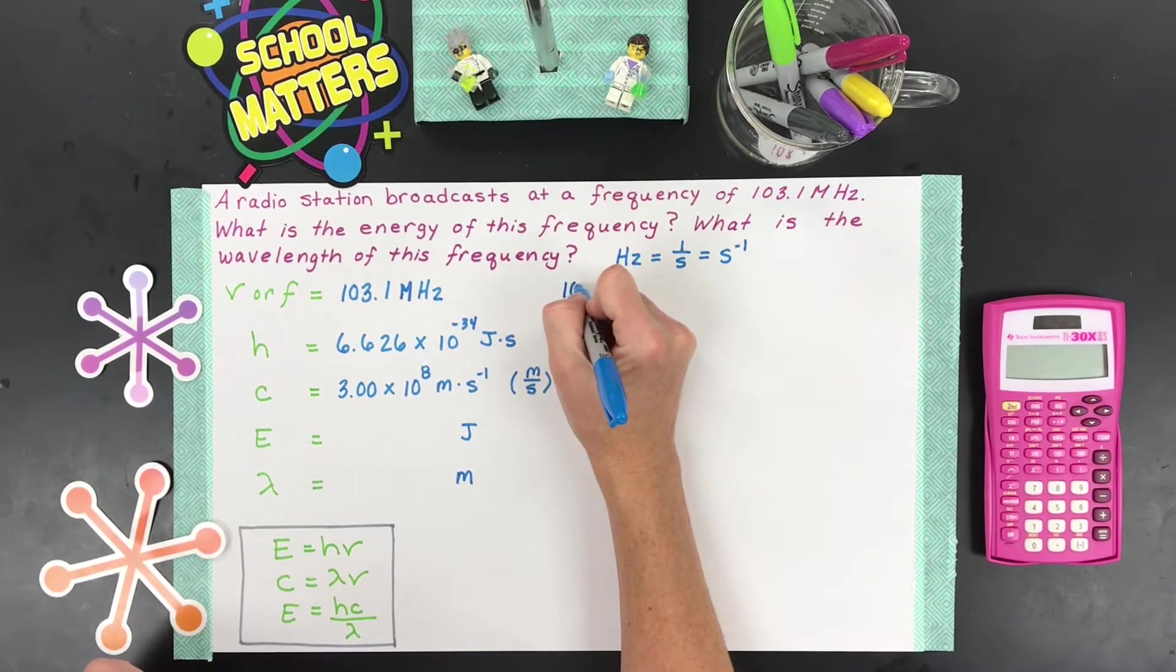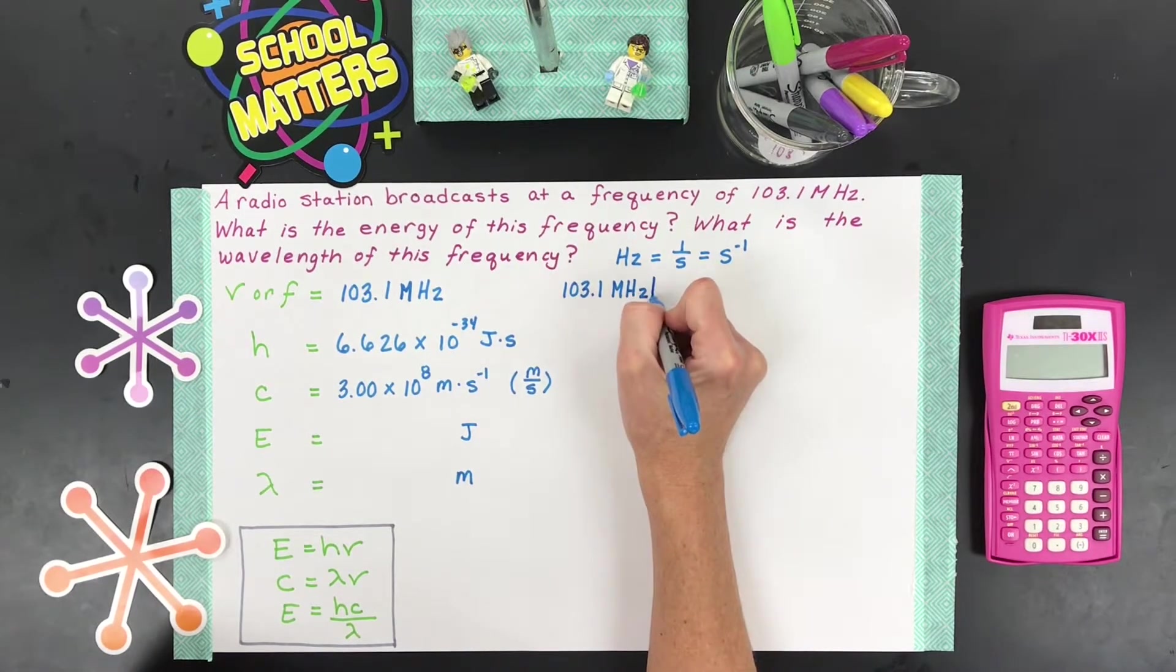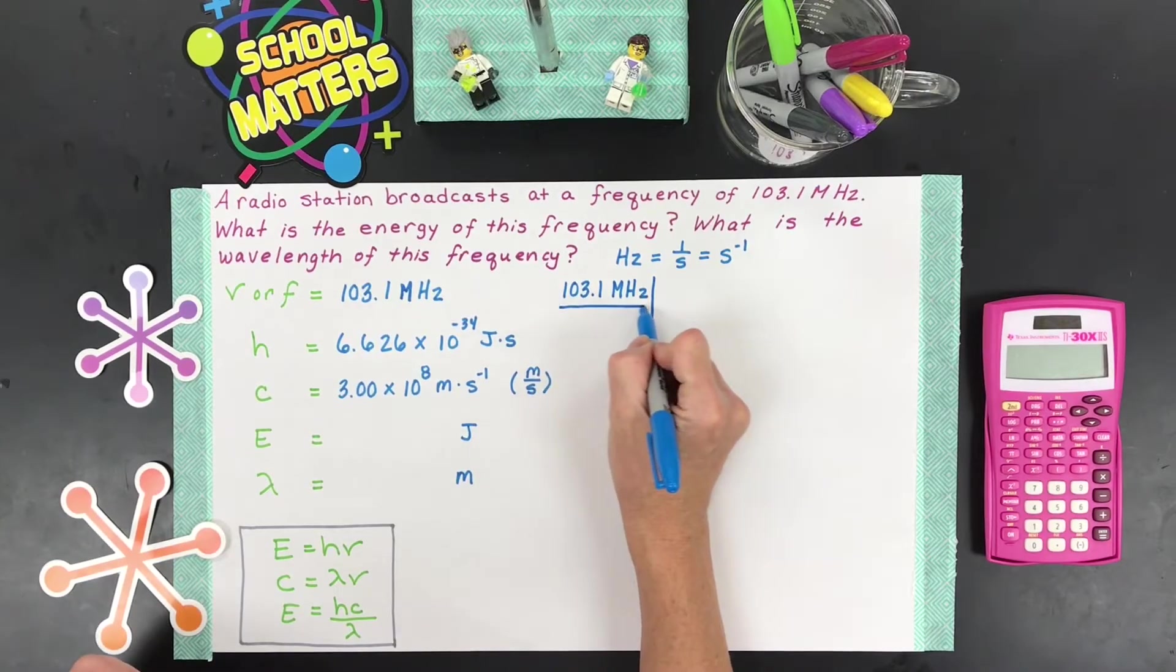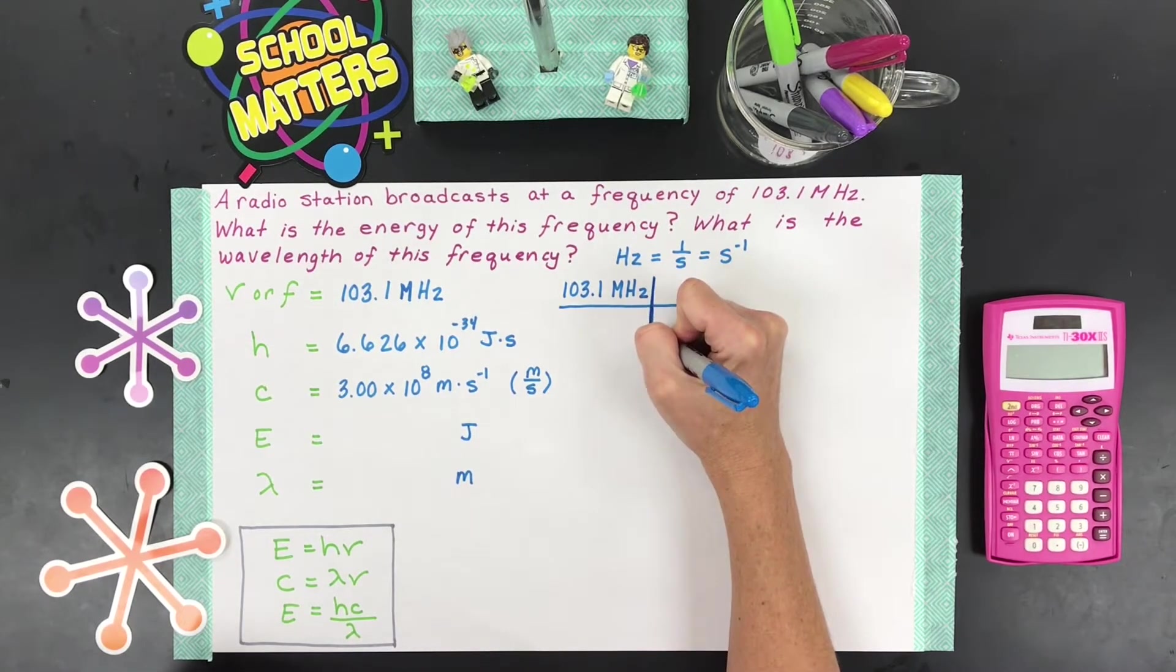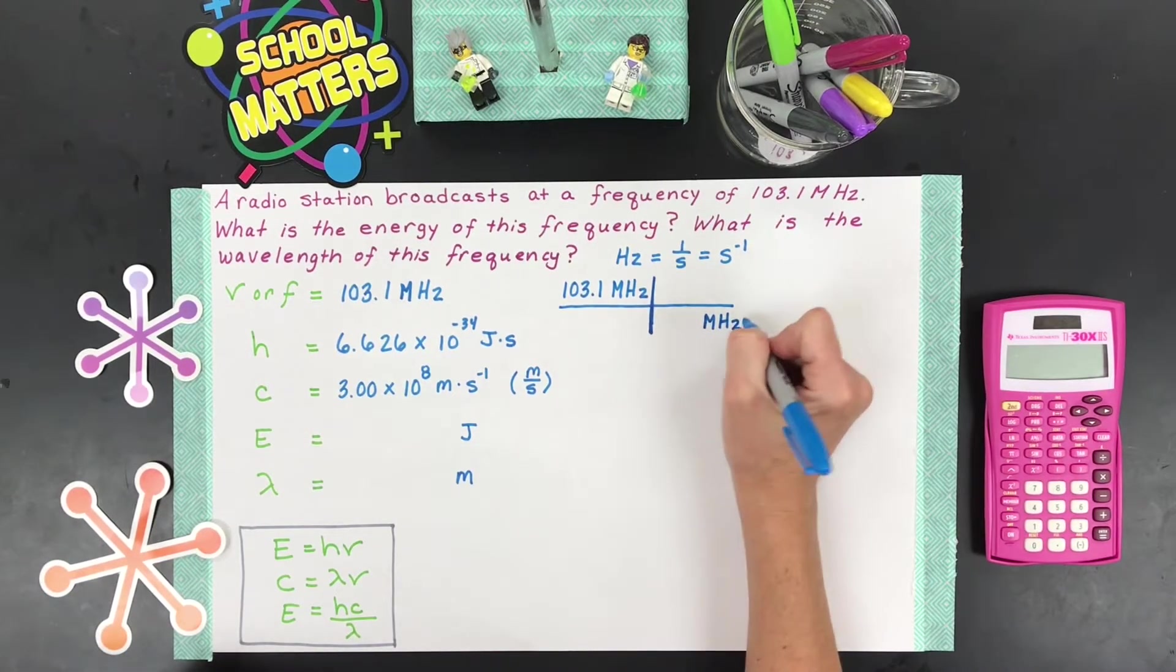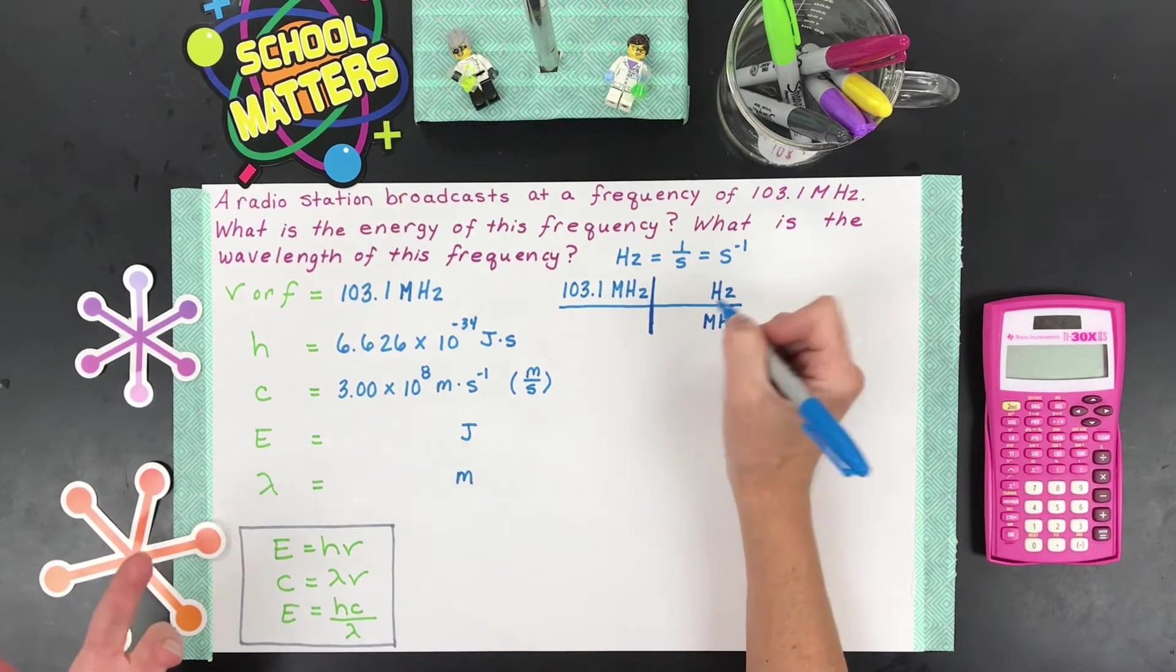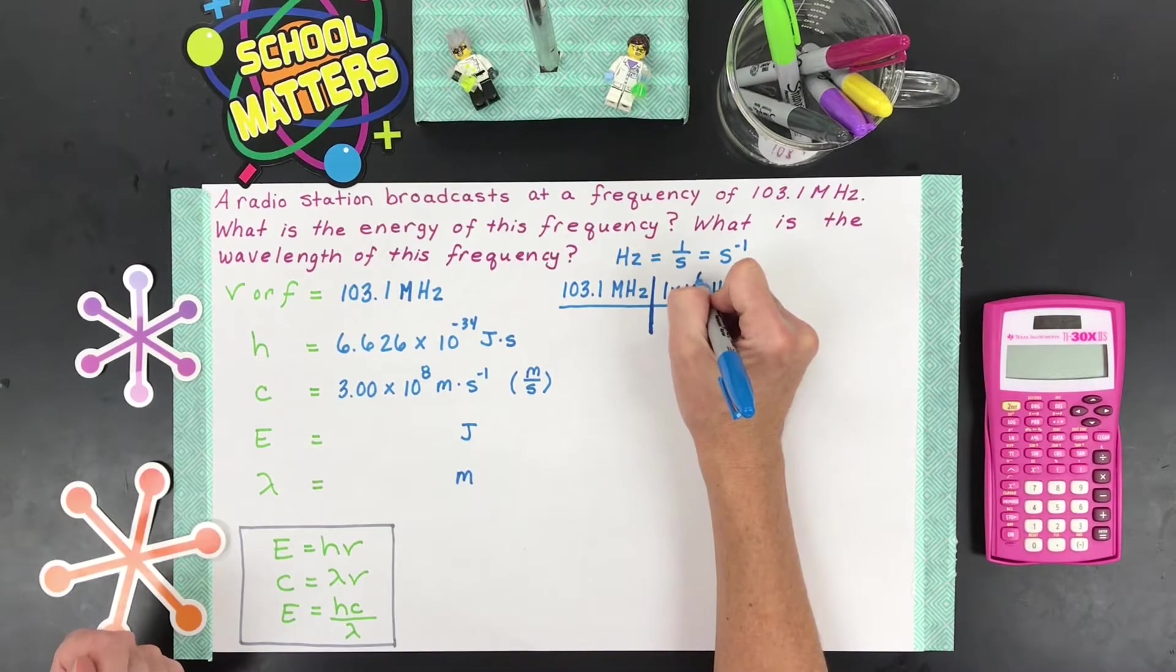So we need to take our 103.1 megahertz, and we need to convert that into just hertz, or what's called per second. So you need a metric conversion where you're going to go from megahertz to hertz, and the answer to that is in one megahertz, there are one million hertz.